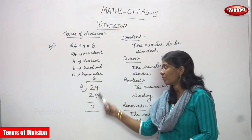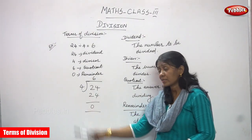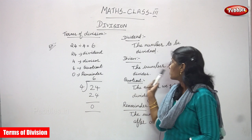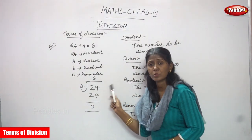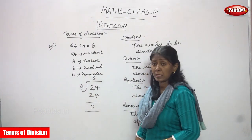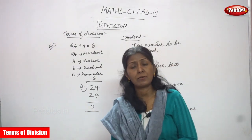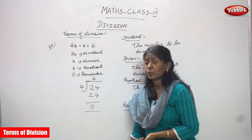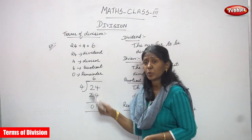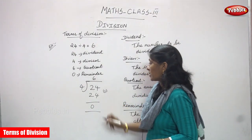24 is to be divided — that is the dividend. The number that divides is the divisor. You must use the 4-times table up to 24: 4×1=4, 4×2=8, 4×3=12, 4×4=16, 4×5=20, 4×6=24. So 6 is written on top — that is the quotient, the answer we get on dividing.